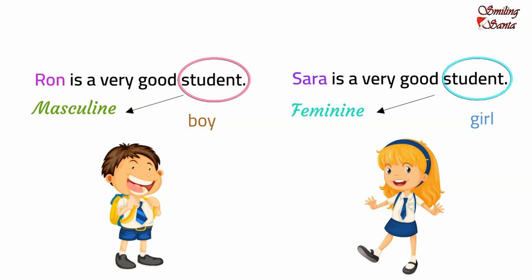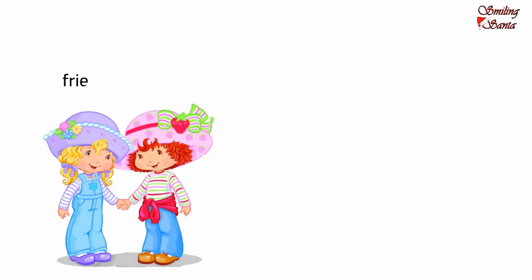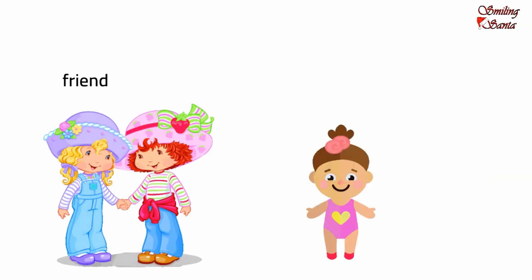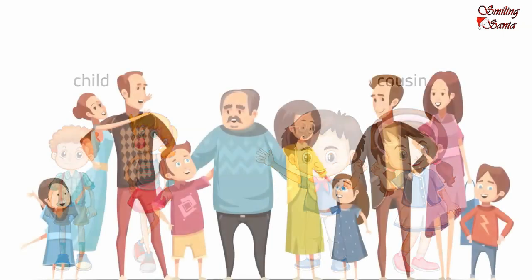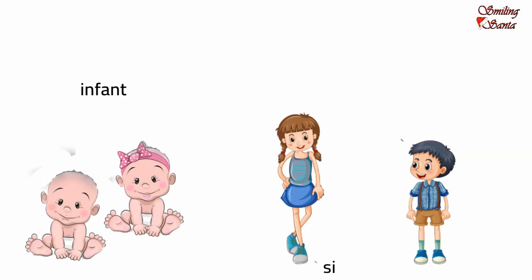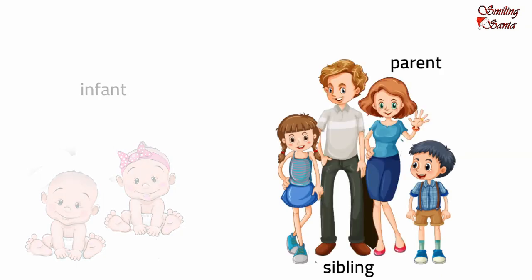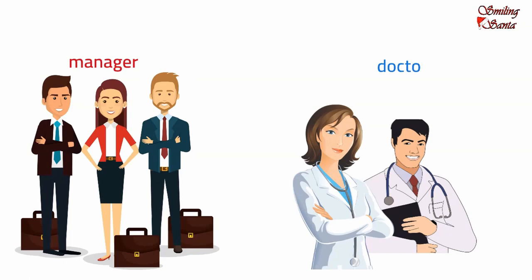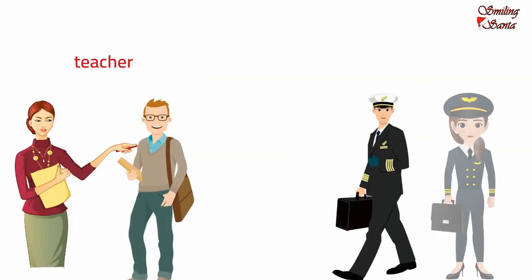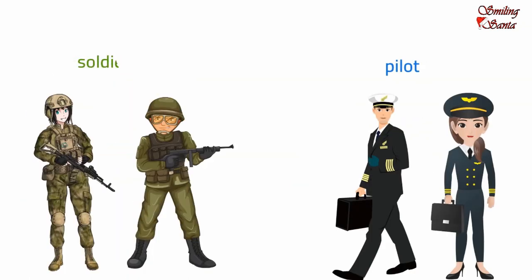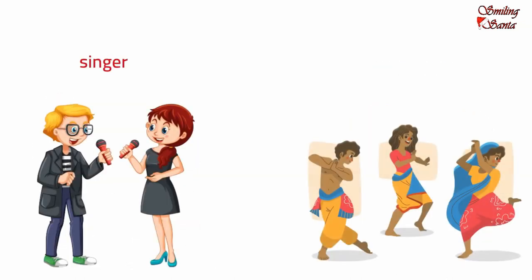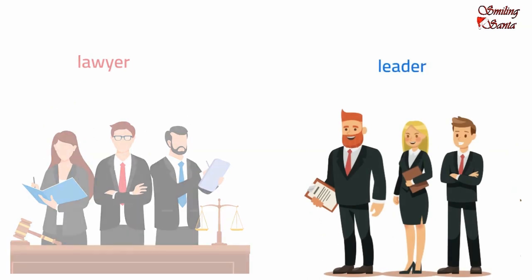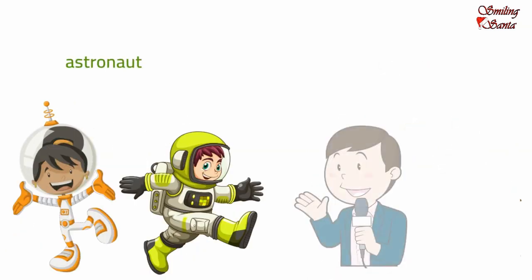So, the word student is a common gender. Examples of common gender are: friend, baby, child, cousin, relative, infant, sibling, parent, manager, doctor, teacher, pilot, soldier, neighbor, singer, dancer, lawyer, leader, astronaut, reporter.